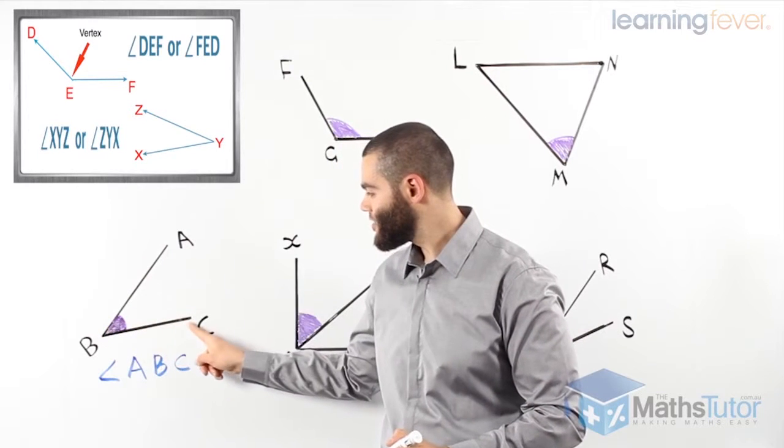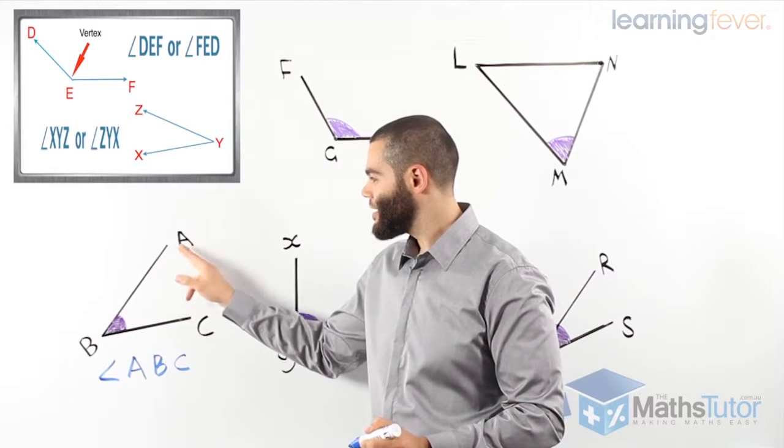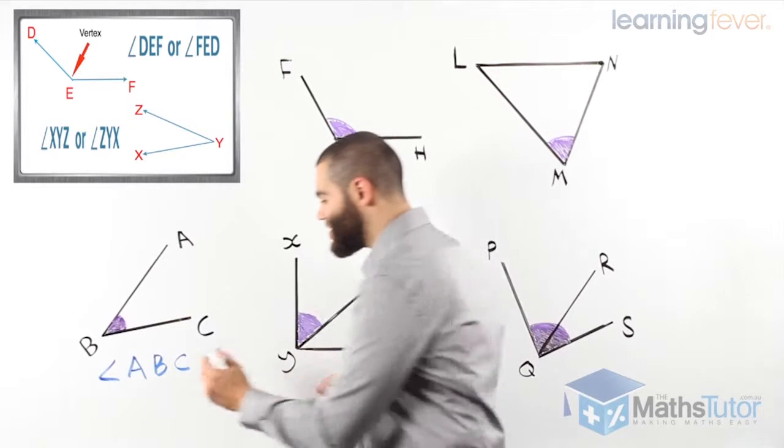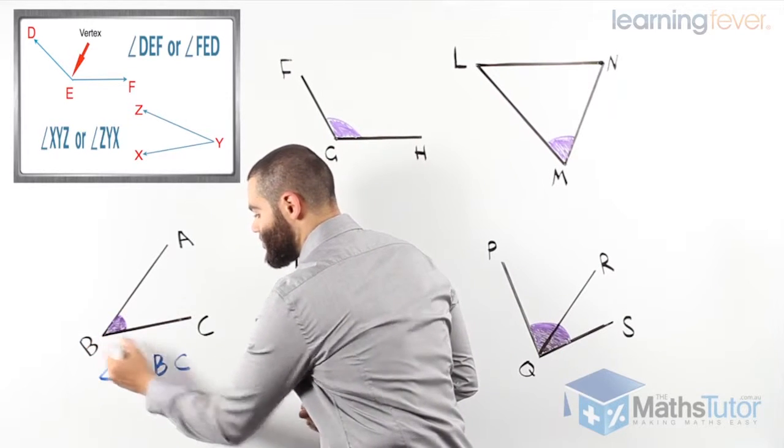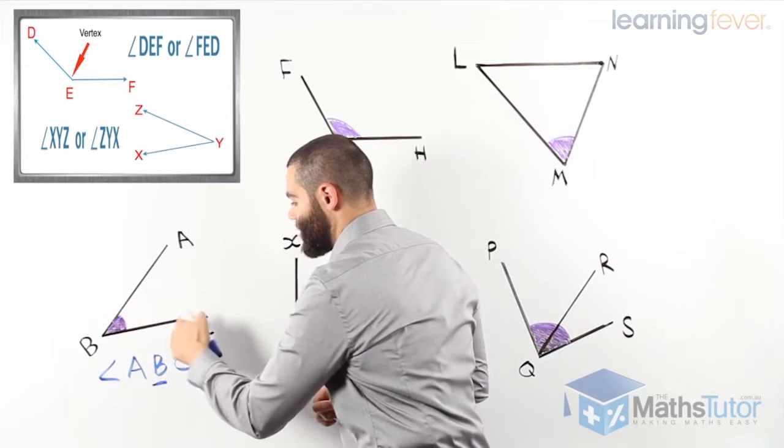Angle ABC. Or you can say angle CBA. However, I like it angle ABC. Both are correct as long as the vertex is in the middle.